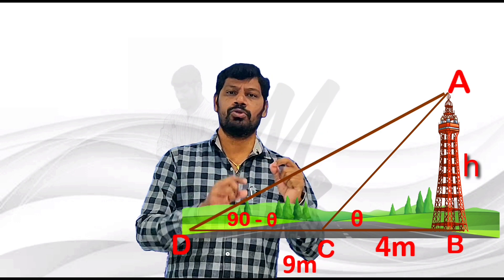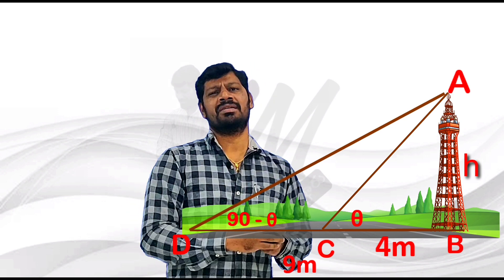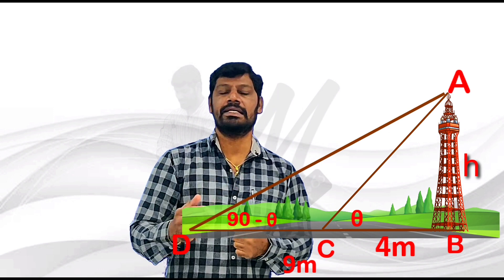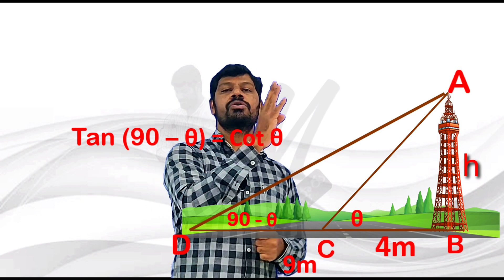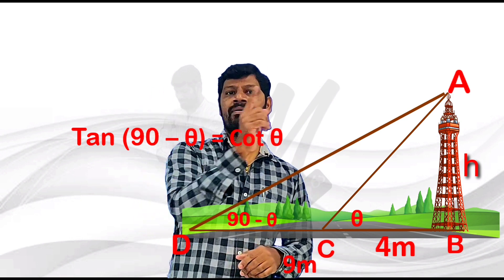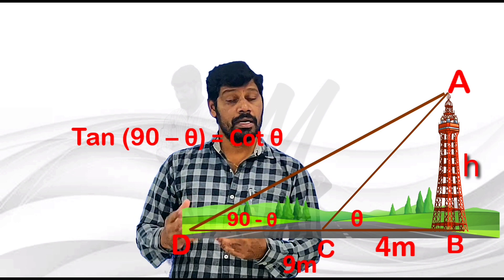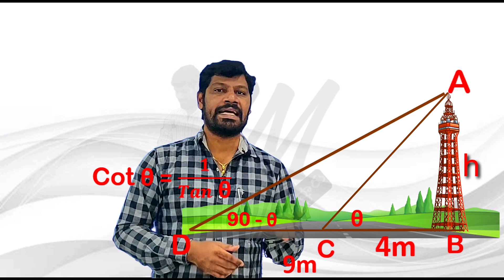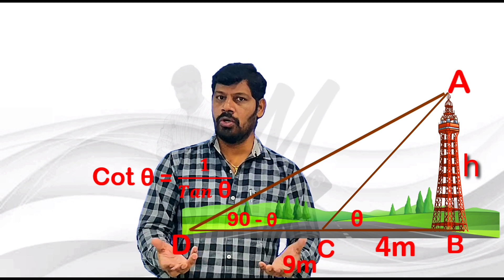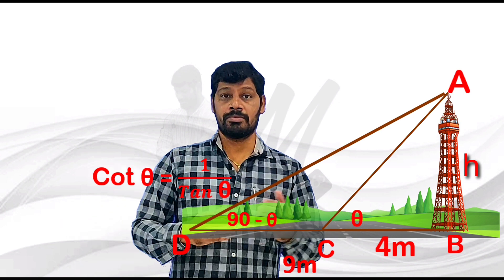Complementary ratios — a small but important topic. Sin(90 minus theta) equals cos theta. Cos(90 minus theta) equals sin theta. Tan(90 minus theta) equals cot theta. Also, cot theta equals 1 by tan theta. We will use these two values.